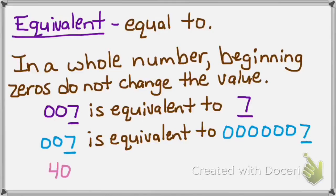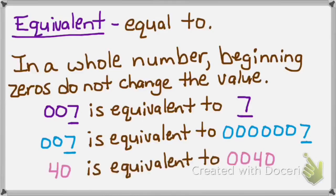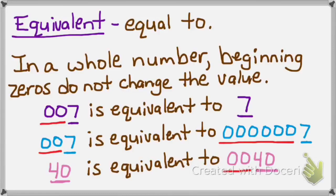By the same token, 40 is equivalent to 0040 — they both have 40 whole Hershey bars. So in whole numbers, beginning zeros do not change the value; it keeps the value the same because they mean nothing.